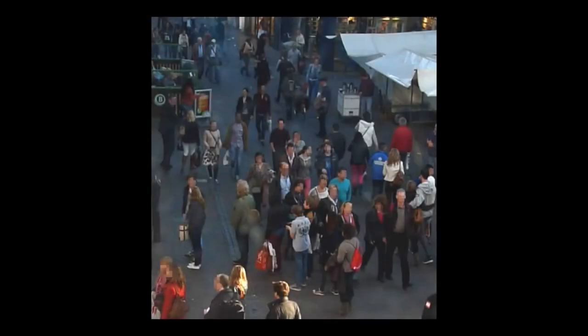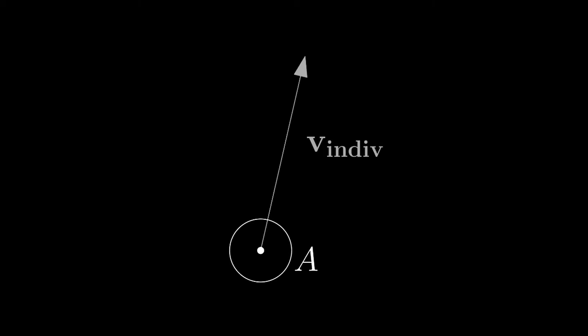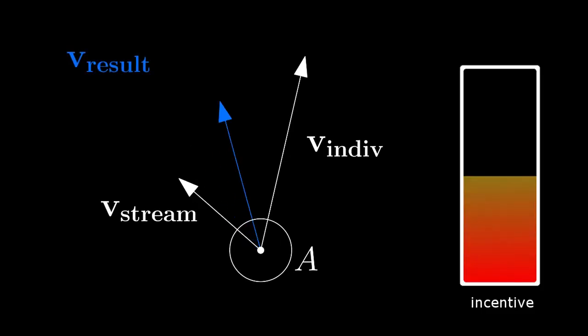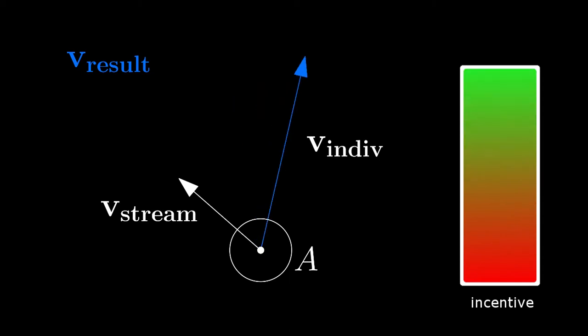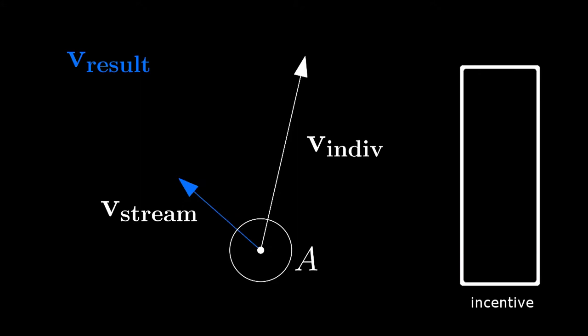In our model, crowd coordination is described by a set of streams. Streams occur as groups of nearby agents begin to actively coordinate their movements. The velocity of an agent is an interpolation between the agent's individual velocity and the stream velocity of a nearby crowd. We say that an agent's incentive is a dynamically changing interpolation value that describes that agent's willingness to comply with a crowd's stream motion.